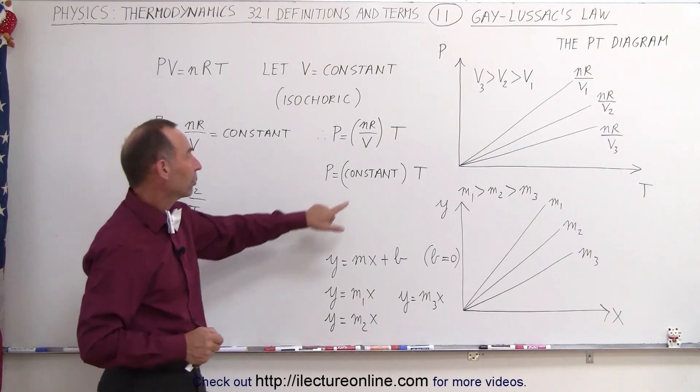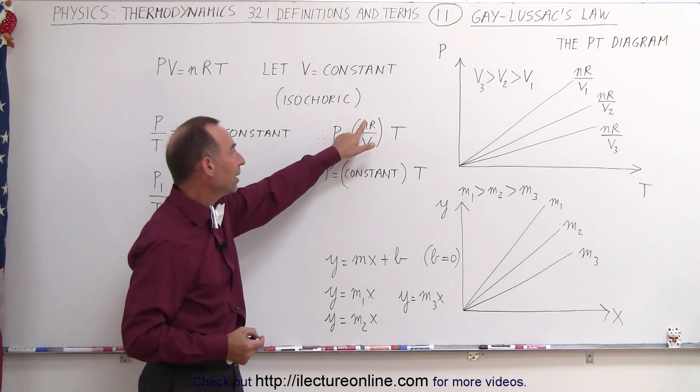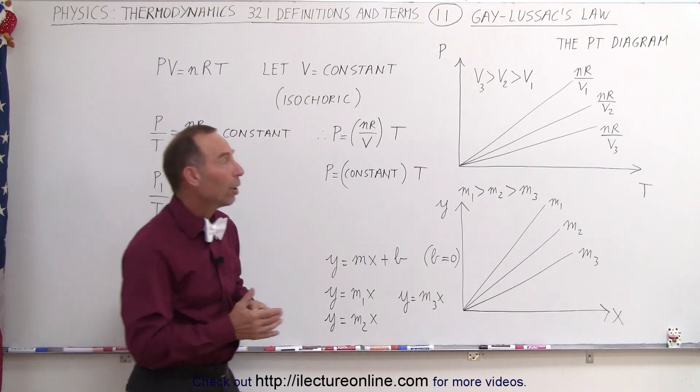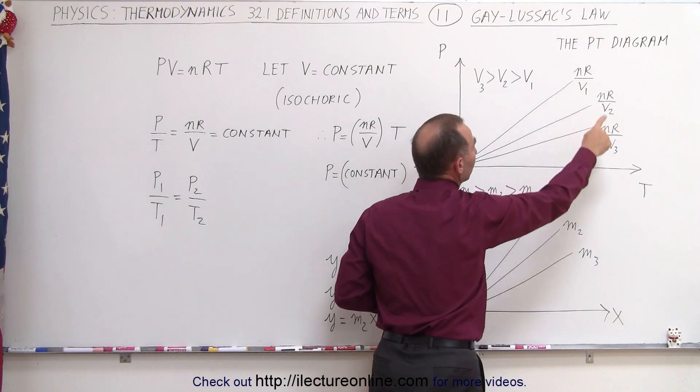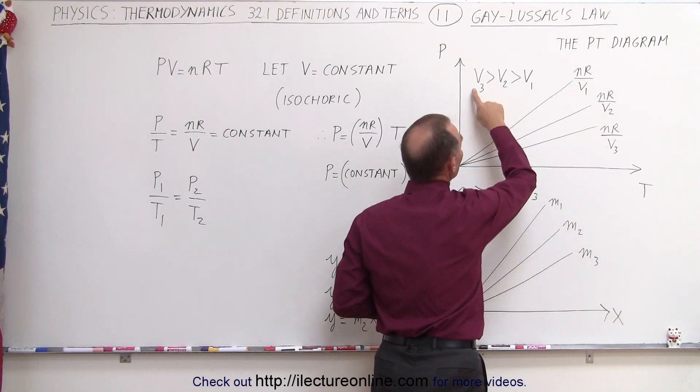Now take a look here, that constant m is now nR over V. So nR over V represents the constant of these lines. Notice this is a larger quantity, this is a smaller quantity. When V is larger, since it's in the denominator, nR over V is going to be smaller.